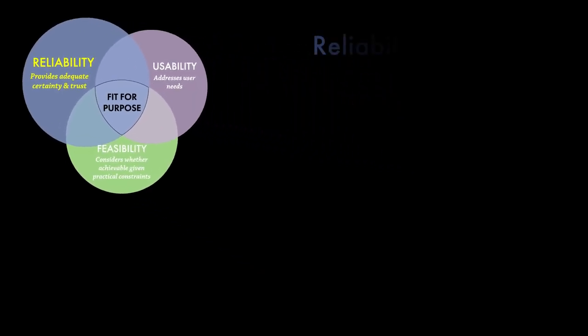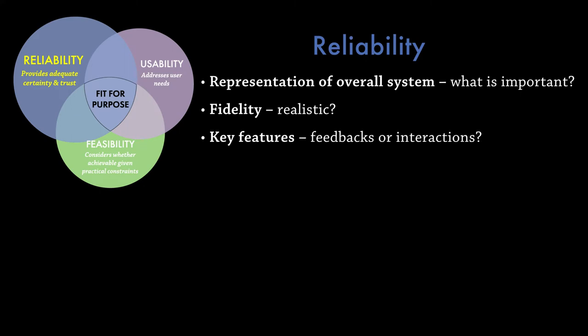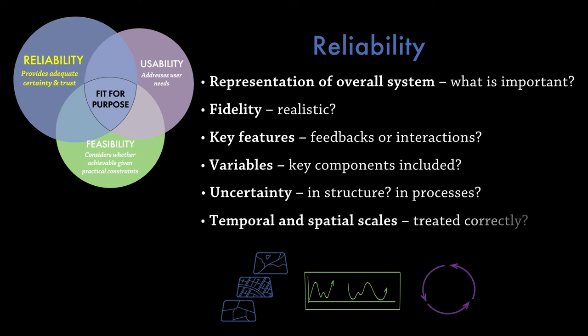Then we want to understand the problem context: what are the critical system or problem characteristics, what scales are important, what level of uncertainty is acceptable and can the model uncertainty be reduced? Examples of other requirements related to the problem context may pertain to the representation of the overall system — for example, is it more important to examine the interactions between individuals and their impact on the system, or to examine the aggregated effects? Fidelity, which describes how well the model represents the real world, is another example, as is how well the key features of the system or problem are represented — for example, feedback loops, interactions, variables or factors like key components or external drivers. Or perhaps it is important to consider representation of uncertainty, including the magnitude of interactions, model structure, or how temporal and spatial scales are treated. All of these need to be carefully considered for the model to be reliable.